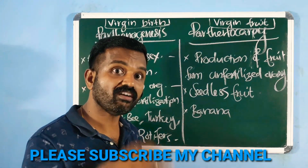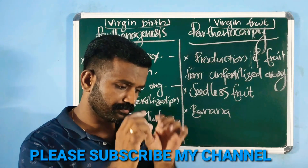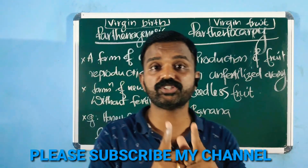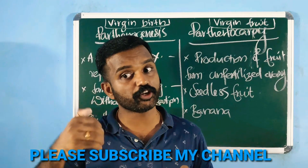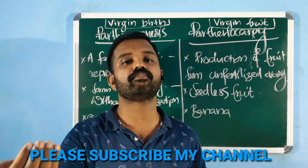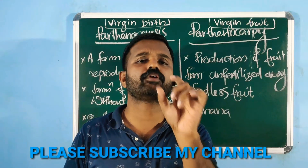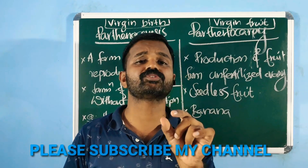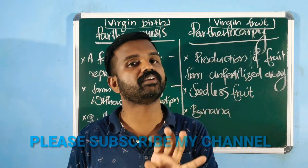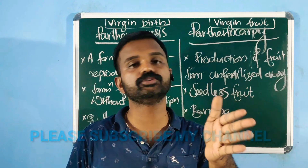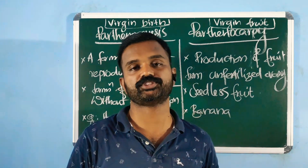So the fundamental differences: Parthenogenesis is a process of asexual reproduction where new organisms are formed without fertilization. Parthenocarpy is only a formation or process of fruit formation — fruit is formed without fertilization, it will not reproduce, and those fruits are seedless fruits.